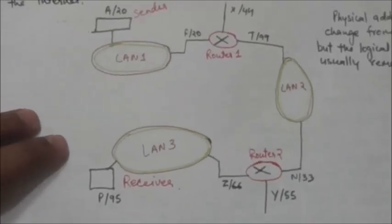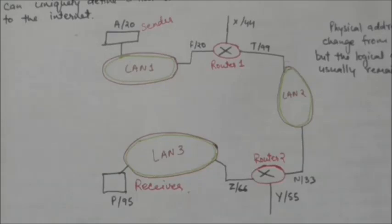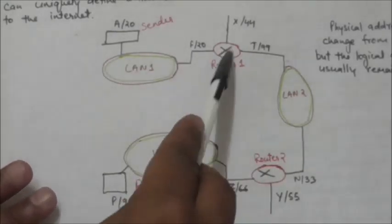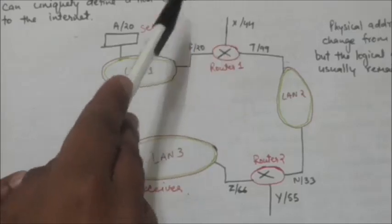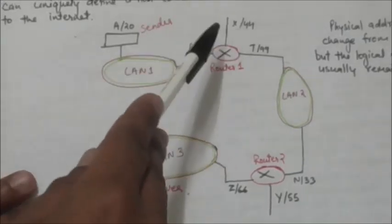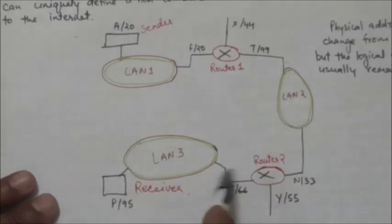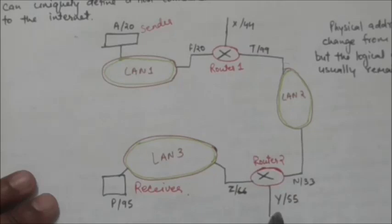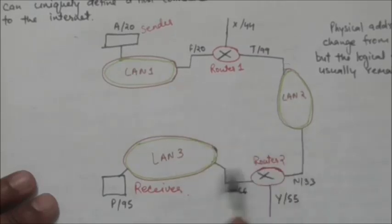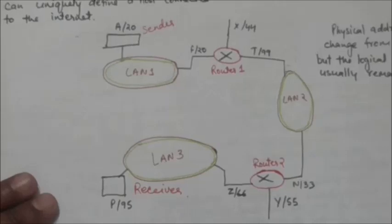This diagram shows a part of the internet with two routers connecting three LANs: LAN 1, LAN 2, and LAN 3. Each device has a pair of addresses — a logical address and a physical address — for each connection. A computer connected to only one link has only one pair of addresses. Each router is connected to three networks, so each router has three pairs of addresses, one for each connection. Each router must have a separate physical address for each connection.